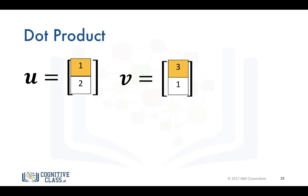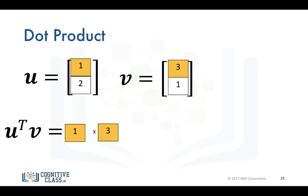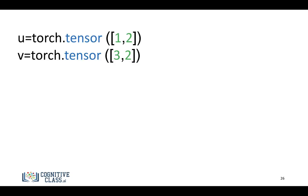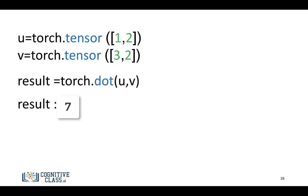Another really popular operation is a dot product. We have tensor U and tensor V, and the dot product is defined as follows: we take the first element of tensor U and tensor V and multiply them together, then add the product of the second elements of tensor U and tensor V to get our result. This extends to an arbitrary number of dimensions. In PyTorch, we use the function torch.dot(), and that will produce the dot product.